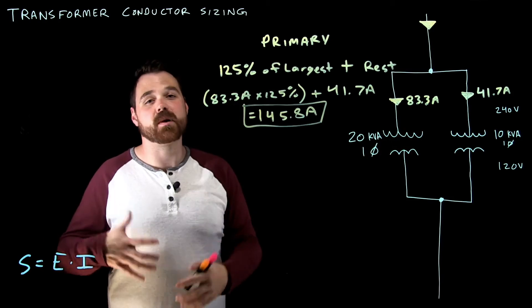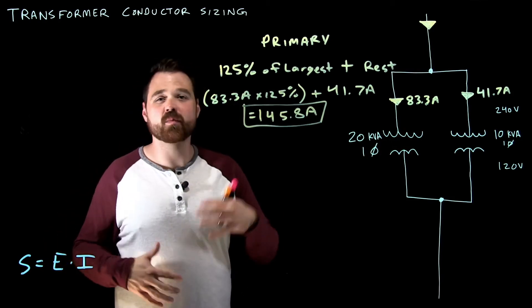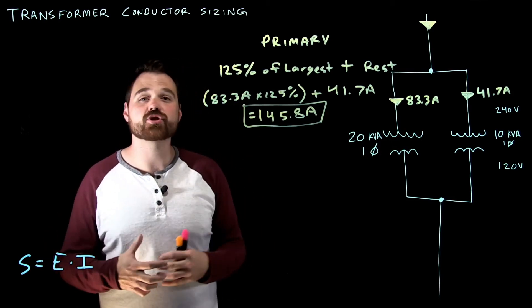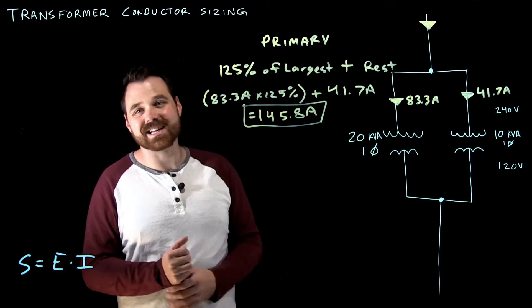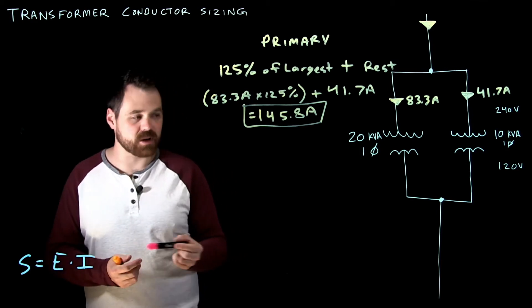Again, that's going to be determined by, am I copper? Am I aluminum? What are my termination temperatures? What's my wiring method? And then I'm going to go to the appropriate table and size that conductor based upon that information.